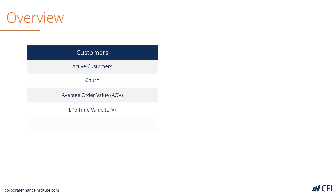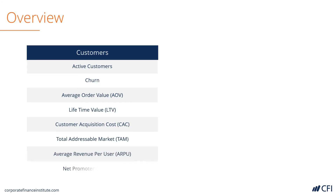First, a quick overview on the customer side of metrics. We're going to run through quite a few of these in detail, but at a high level: customers, customer churn rate, the average order value per checkout, the lifetime value or customer lifetime value, the cost to acquire a customer, the total addressable market, the average revenue per user, and net promoter score are all very important customer metrics and will be incorporated in our model in one way or another.